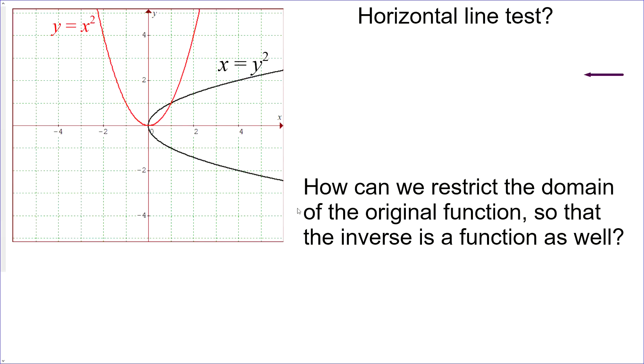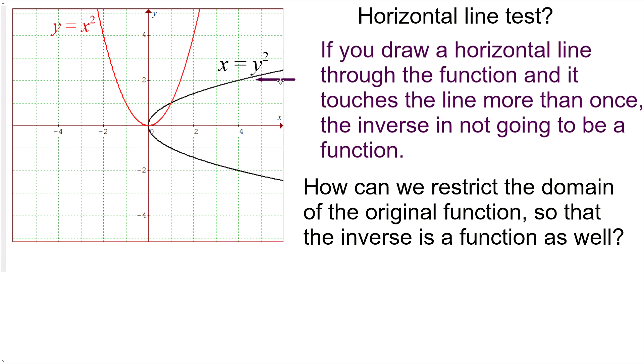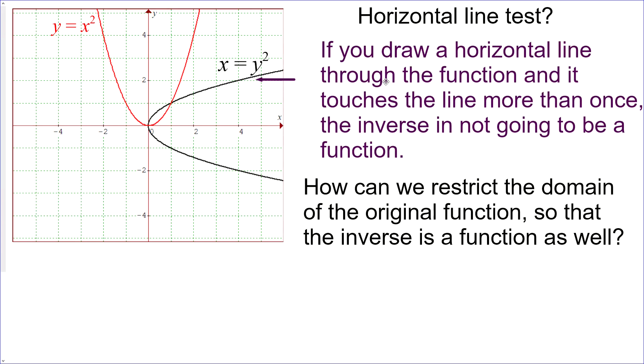We had the vertical line test before to determine if a relation was a function. Now we have the horizontal line test. Take a guess what that might be. So that's if you draw a horizontal line through the function, and it touches the line more than once, then the inverse is not going to be a function.